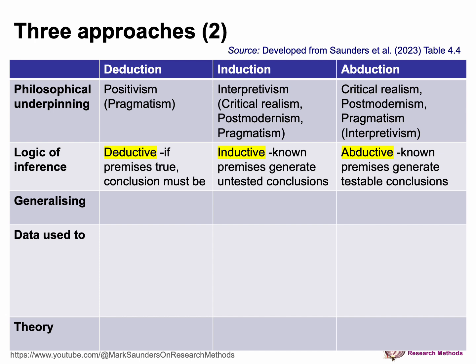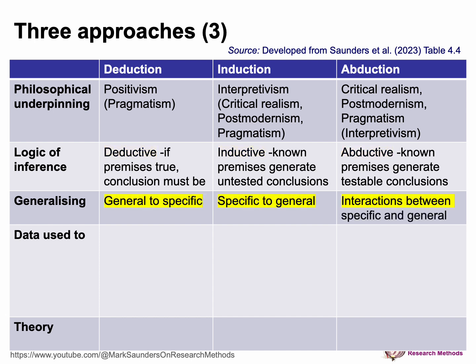How do we generalize for each of these? For deduction, we start with the general and generalize into the specific — we have a general theory and then test it. For induction, we start with the specific data and then try to generalize theoretically, not statistically. With abduction, we go back and forth — interactions move between the specific and the general in a circular effect, and it can involve numerous cycles.